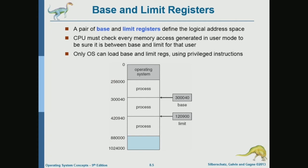A simple scheme we will start with is: each program has its own block in memory. There is a memory block reserved for the operating system — the kernel. Then user processes — each user process has its own block of memory. At this point, each process has a contiguous block of memory — just one piece.